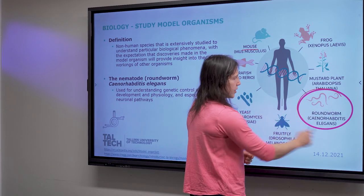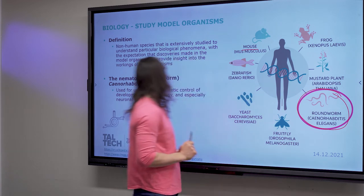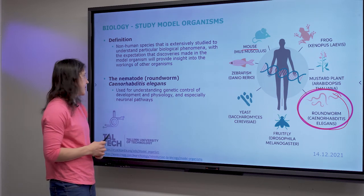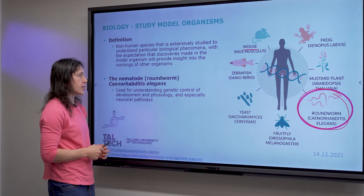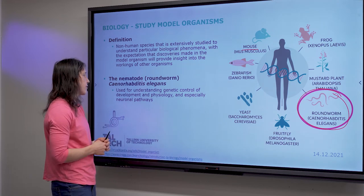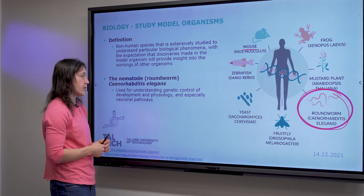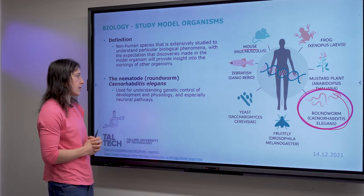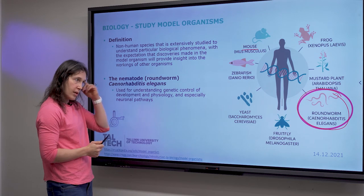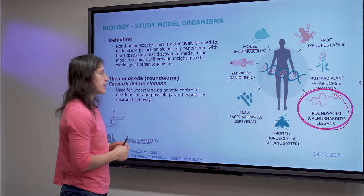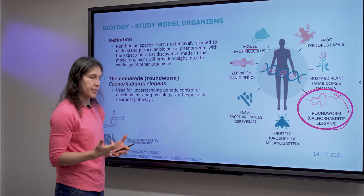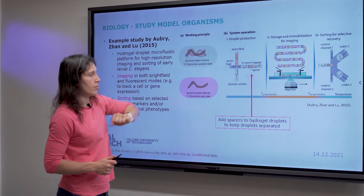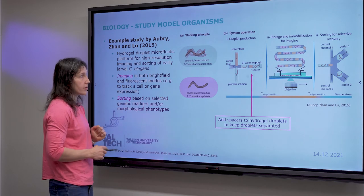But today we have the roundworm — Caenorhabditis elegans — which is used for understanding the genetic control of development and physiology, and especially things about the neuronal pathway. So a lot of brain studies but also early stages of development — a lot of that research is done. Let's take a further look at the example. There was a nice study in 2015 where they wanted to study the worm and do experiments.